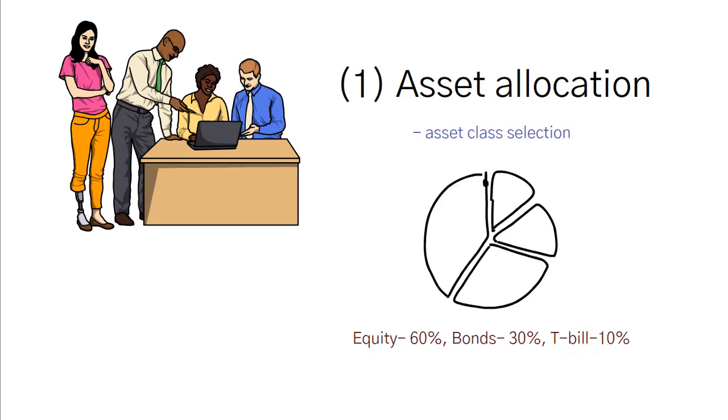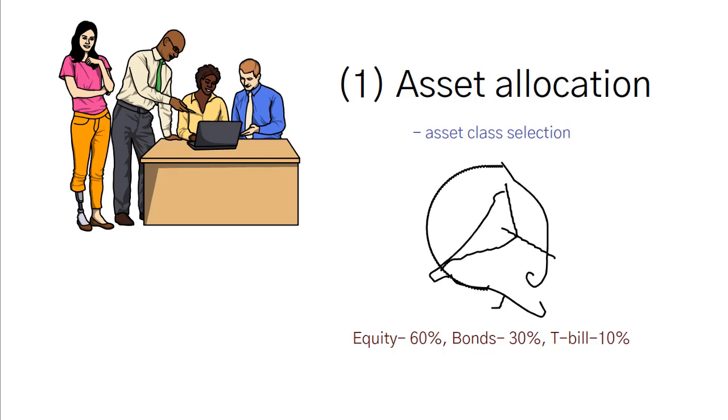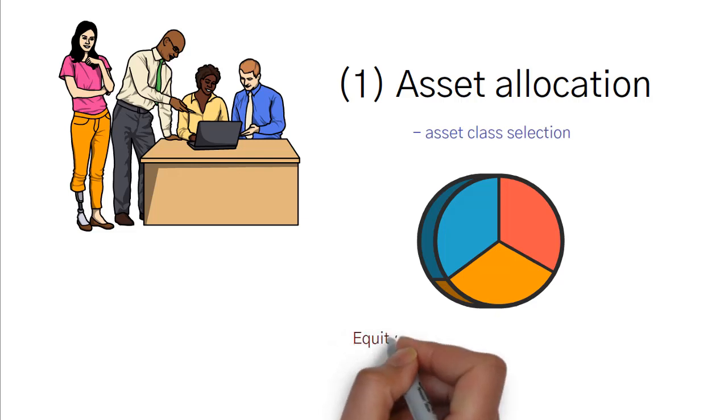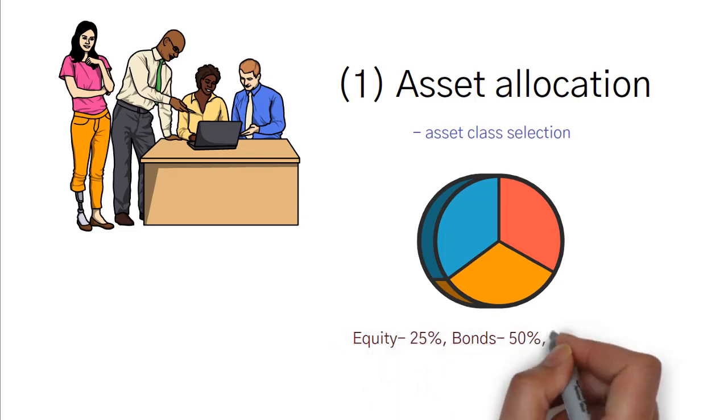Same way, you can also invest 25% of your money in equity, 50% in bonds, and 25% in treasury bills. If you change the percentage, it becomes a new portfolio.